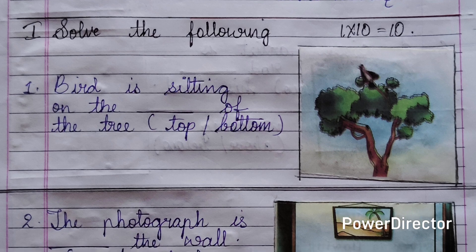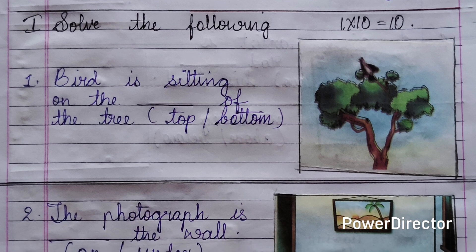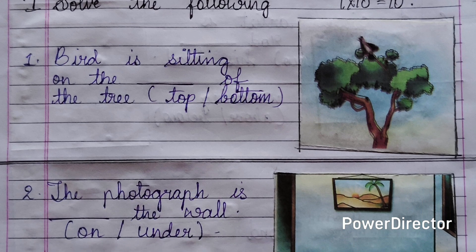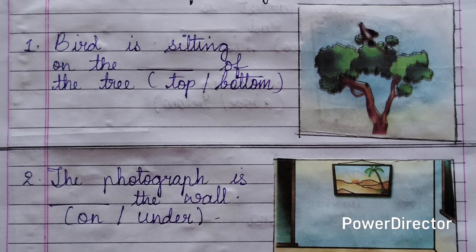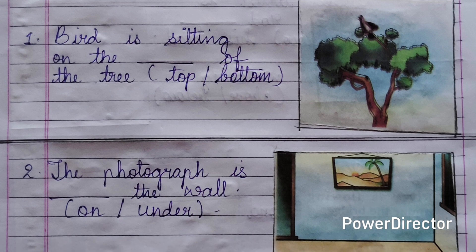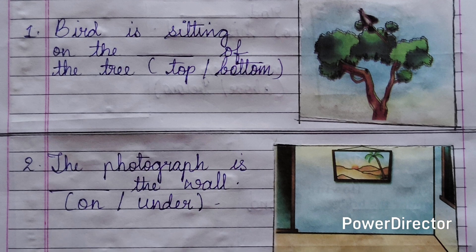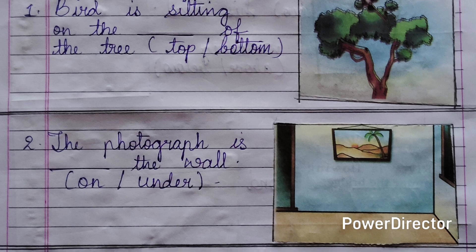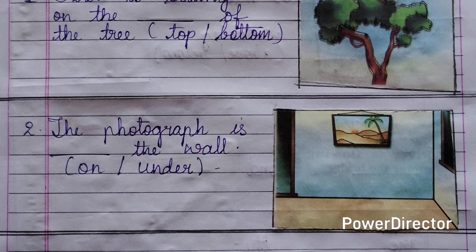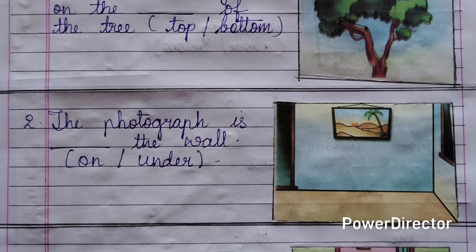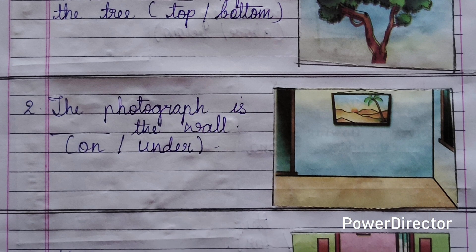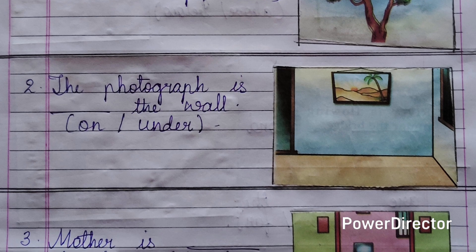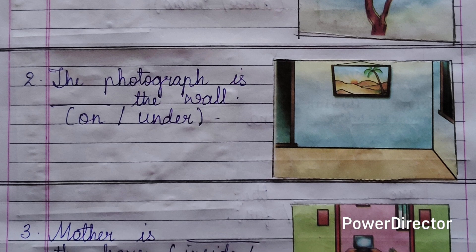For number one, the bird is sitting on the dash of the tree. Options are top or bottom. If you see the picture, you can see the bird is sitting on the top of the tree, so the answer is top. Number two, the photograph is dash the wall — on or under. If you see the picture, it is on the wall, so the answer is on.